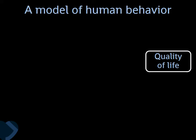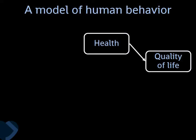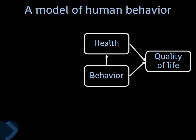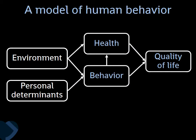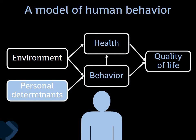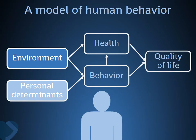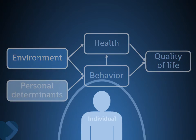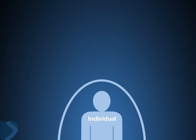The logic model used for behavior explanation in intervention mapping assumes that we all want to increase everybody's quality of life. One of the big determinants of quality of life is health, and both are determined by what people do. So we want to change people's behavior. Behavior is determined by people's personal determinants and their environment. Personal determinants are everything inside a person — everything somebody thinks, feels, their reasoning.